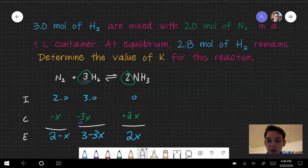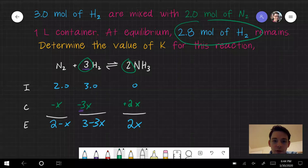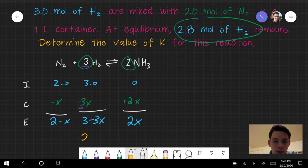Okay, so this should be enough information for me to solve for x, because the problem tells me that 2.8 moles of H2 remain. So right here I know that 3 minus 3x is 2.8. So I could just go in and solve that.